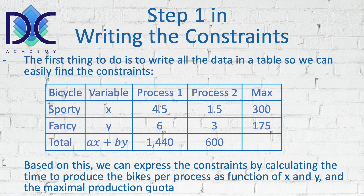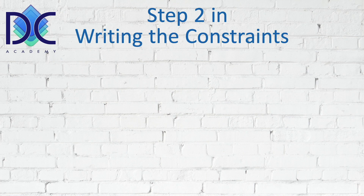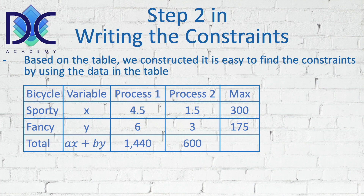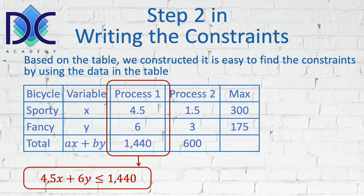Sporty has to be limited to 300 and fancy to 175. Based on this information we can express the constraints. Looking at process one: the time to complete process one is 4.5 times the number of sporty bikes plus six times the number of fancy bikes, and this has to be limited to 1440. This gives us the equation: 4.5x + 6y ≤ 1440.